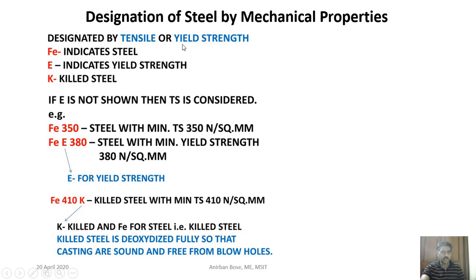According to Indian standard, steels can also be identified based on mechanical properties. For example, Fe 350 means it is a steel with minimum tensile strength of 350 megapascals — here tensile strength means ultimate tensile strength. 'Fe' indicates steel, 'e' indicates yield strength, and 'k' indicates killed steel. Fe 380 indicates steel with minimum yield strength of 380 megapascals.